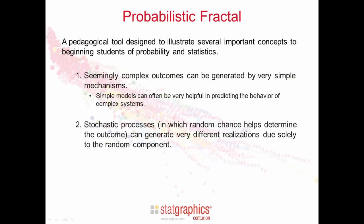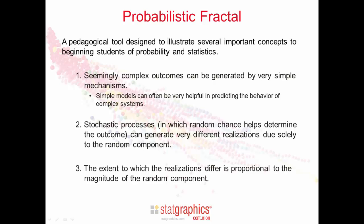The second concept is that stochastic processes — those are processes in which random chance helps determine the outcome — can generate very different realizations due solely to that random component. The third concept is that the extent to which the realizations of the stochastic process differ is directly proportional to the magnitude of that random component.